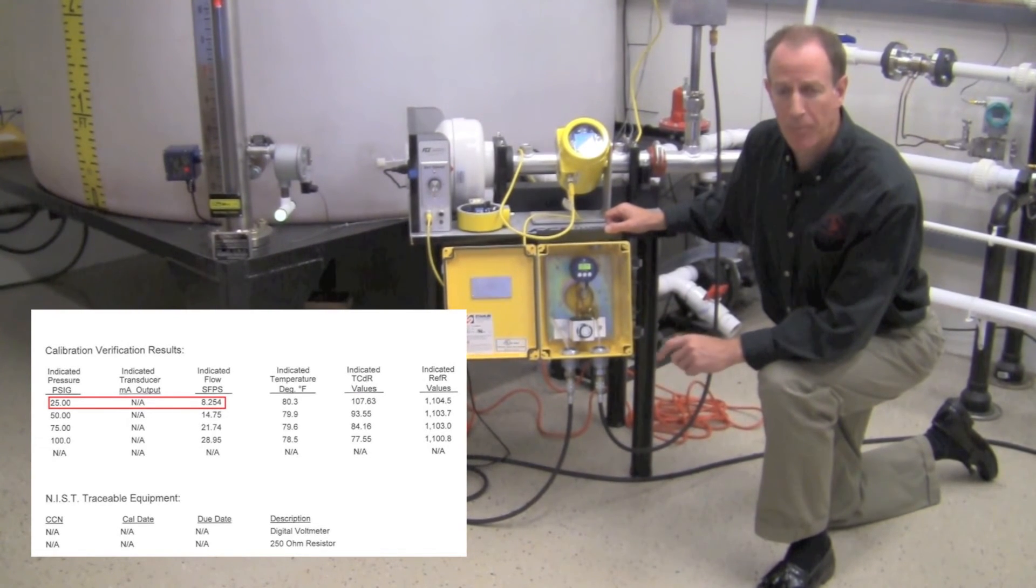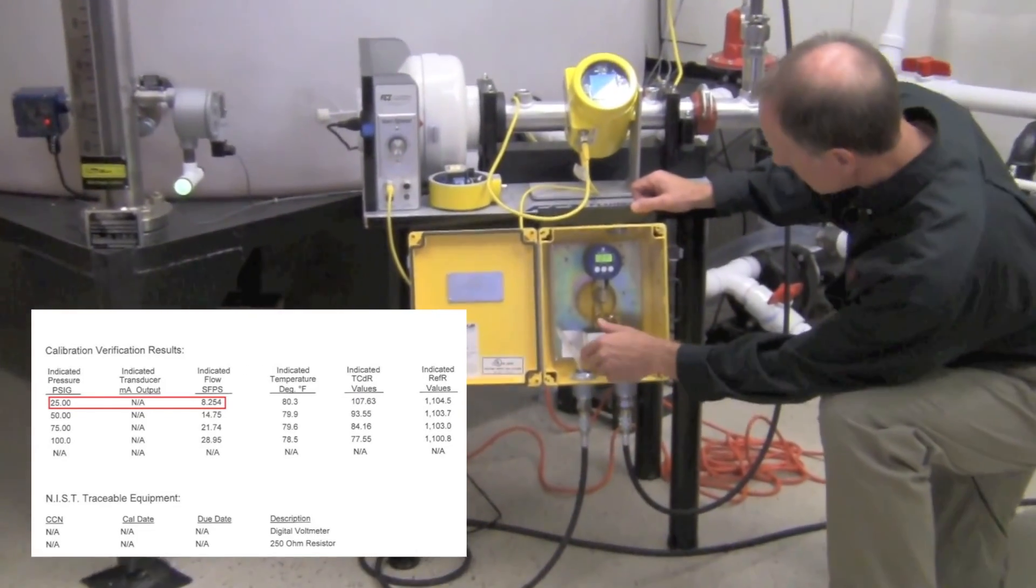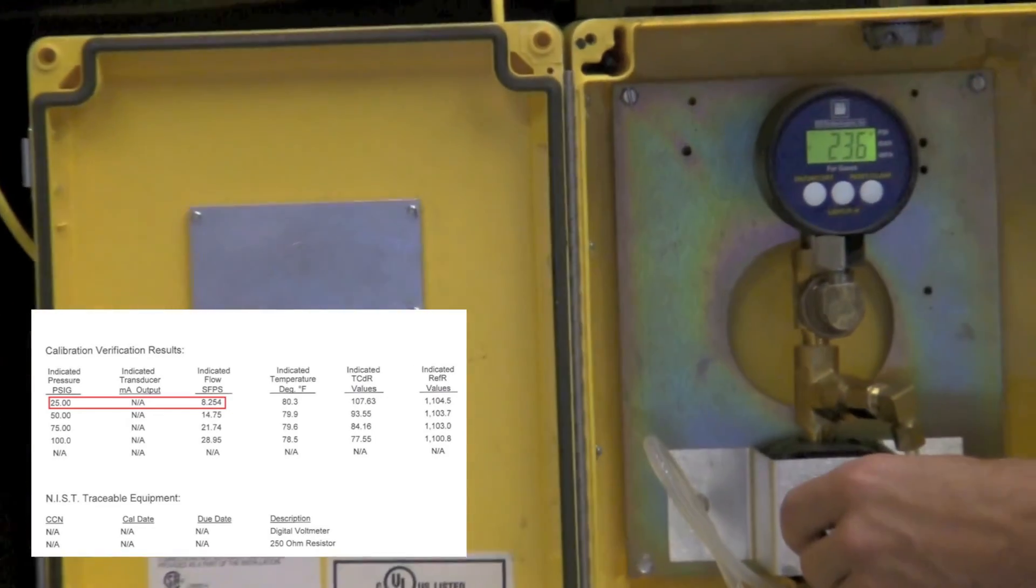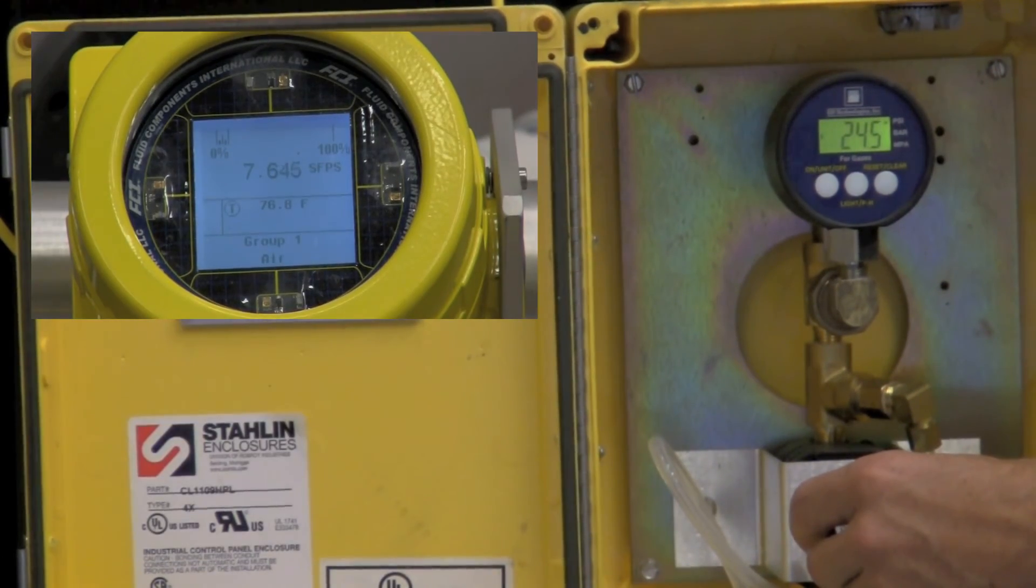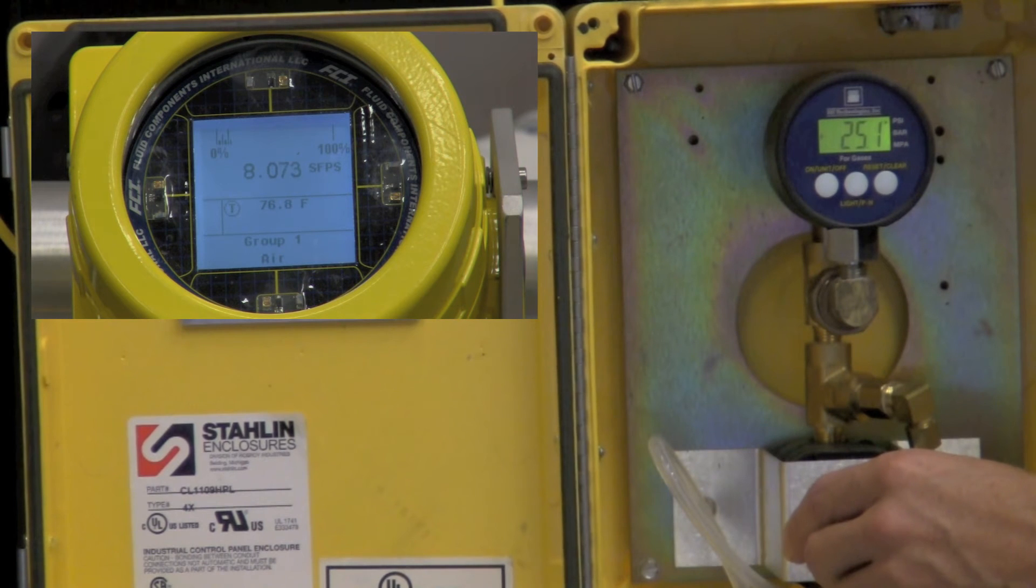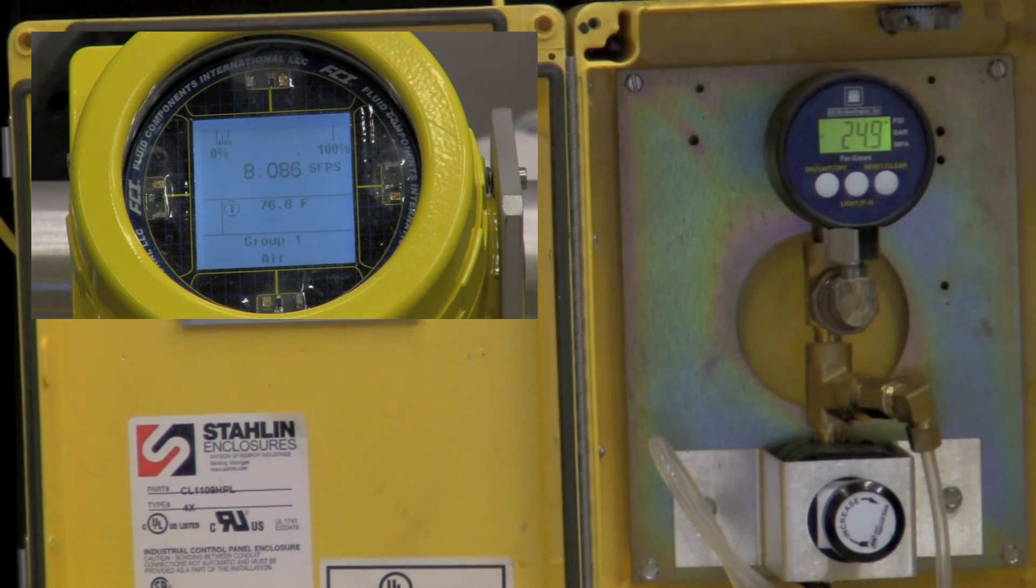First, dial in a pressure of 25 PSI on the regulator. Once the flow reading stabilizes, compare it to the calibration documents.